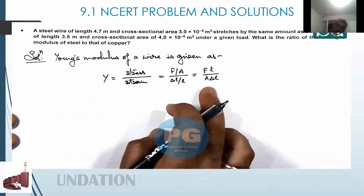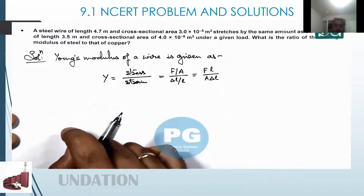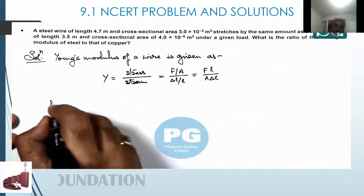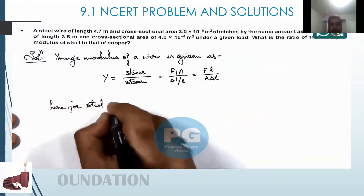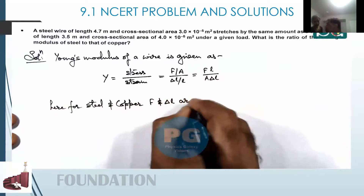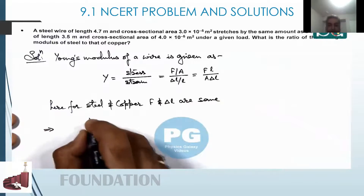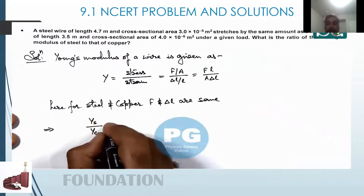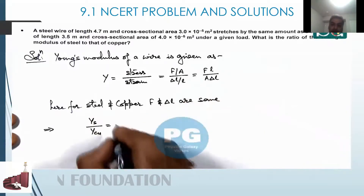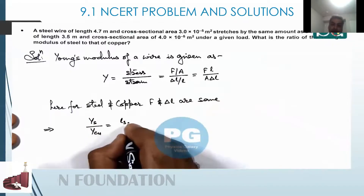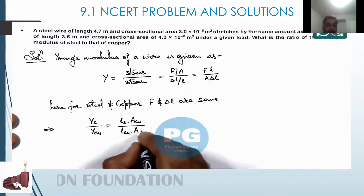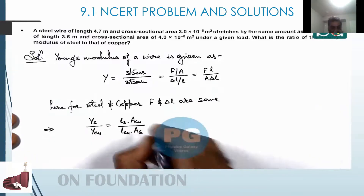The applied force F remains the same in both cases, and we are also given that the stretch amount delta L is the same. So for steel and copper, F and delta L are the same. This implies the ratio of Young's modulus of steel to Young's modulus of copper equals the length of steel multiplied by cross-sectional area of copper, divided by the length of copper multiplied by cross-sectional area of steel.